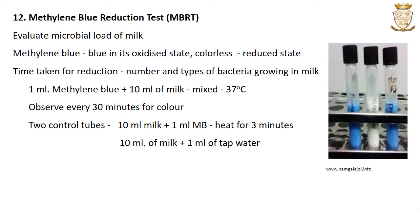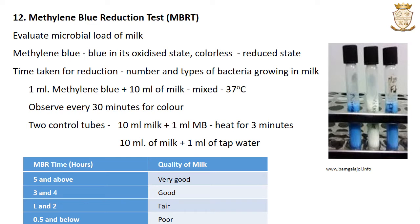Two control tubes are set: one containing 10 ml of milk and 1 ml of methylene blue solution after heating in boiling water for 3 minutes, and another containing 10 ml of milk plus 1 ml of tap water. These controls are set to compare color changes in the experimental tubes. For grading: a reduction time of more than 5 hours indicates very good quality; 3 to 4 hours indicates good quality; 1 to 3 hours indicates fair quality; and less than half an hour indicates poor quality milk.